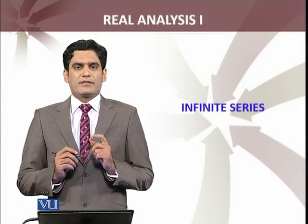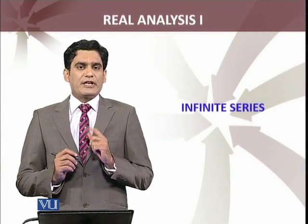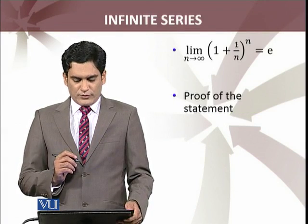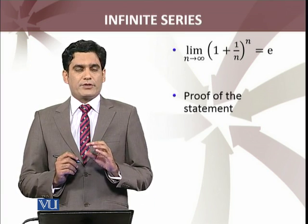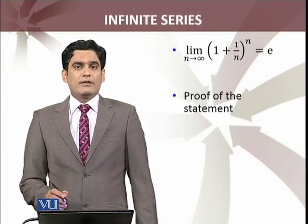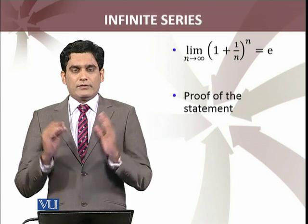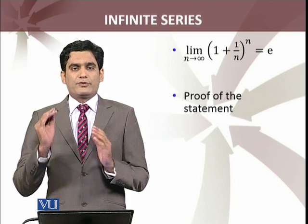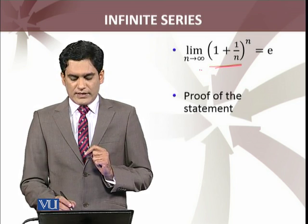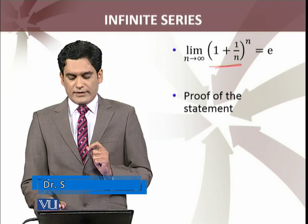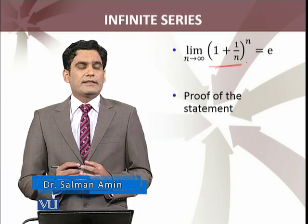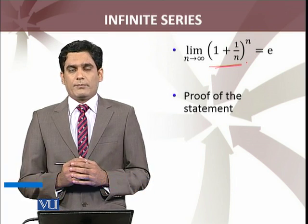We will continue our discussion about the irrational number e, which we have defined previously. There is another alternative definition of the number e, given as a limit: as n approaches infinity, (1 + 1/n)^n. If we take the limit of that sequence as n approaches infinity, the result is the number e. There are several alternative definitions of the number e.